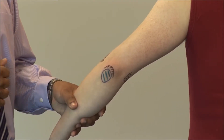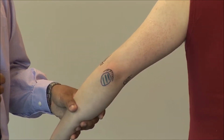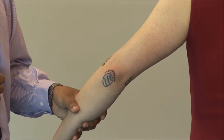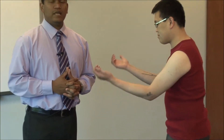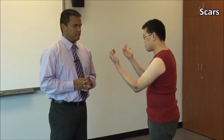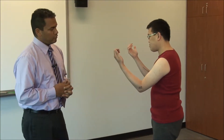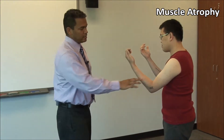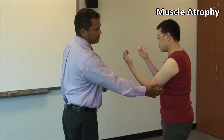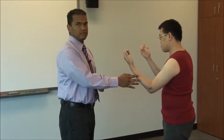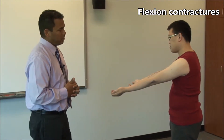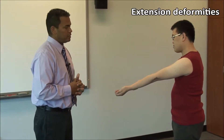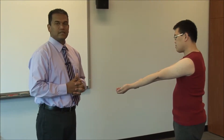If the bursa is hot and red, think of septic bursitis. Also look for rheumatoid nodules and psoriasis on the extensor surface of the elbow. Remember to look at all sides and take note of any scars. Also look for muscle atrophy, such as at the biceps, triceps, and forearm muscles, and look for flexion contractures or extension deformities with the elbows fully extended.